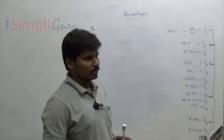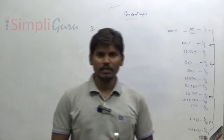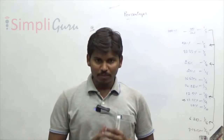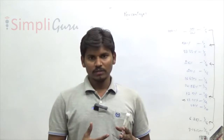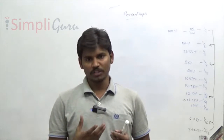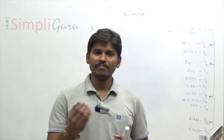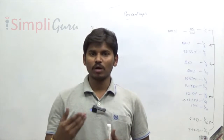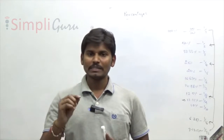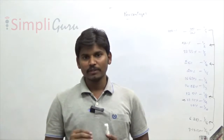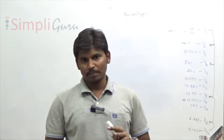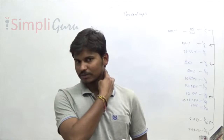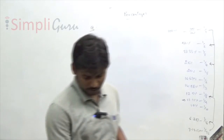One more similar type of question: in an examination, one student got 32% of the total marks and failed by 8 marks. Another student who got 35% got 16 marks more than the pass mark. We need to find the total marks, pass marks, and pass marks percentage. Let's write down this question.